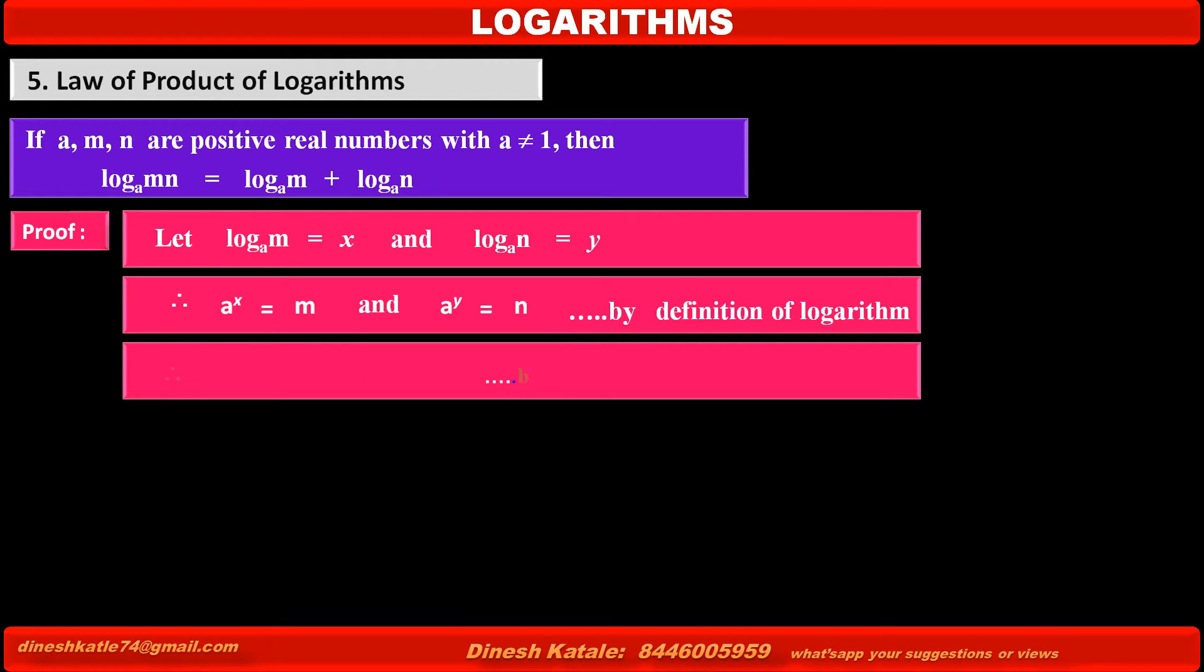Therefore, multiplying these two equations which are in exponential form, we get in the left hand side A raised to X times A raised to Y, is equal to, in the right hand side, M times N.